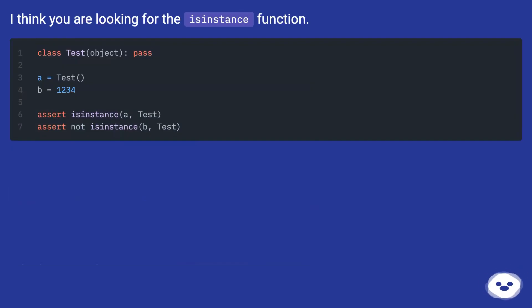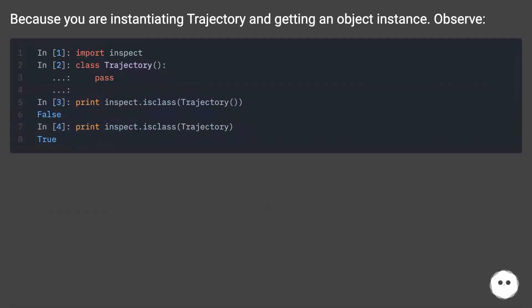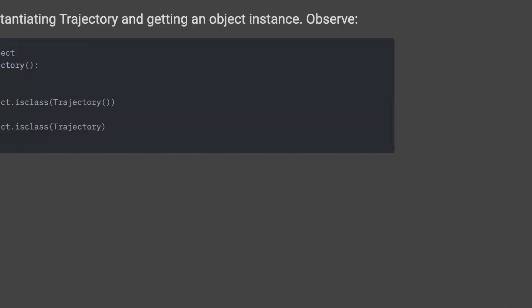I think you are looking for the isinstance function, because you are instantiating Trajectory and getting an object instance. Observe.